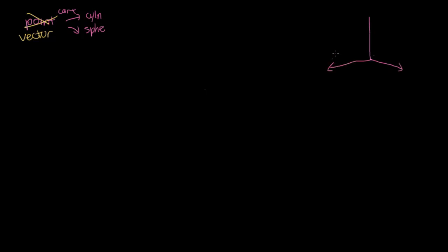In the case of your XYZ vector, your X unit vector is always going to point in this direction, your Y unit vector is always going to point in this direction, and your Z unit vector is always going to point in this direction. But unfortunately, in the case of cylindrical or spherical — let's just do spherical, since that has both angles in question.